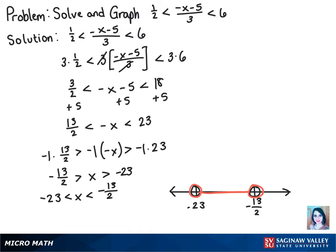Because both circles are empty, we'll have two parentheses. We only use brackets when the circles are filled in. So we have (negative 23, negative 13/2). And that is the solution.